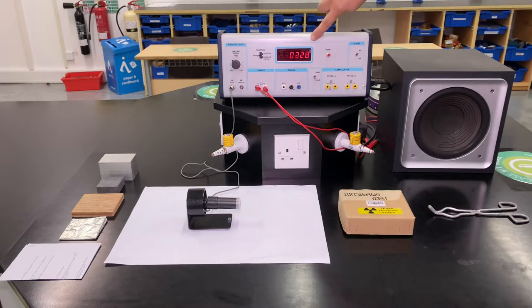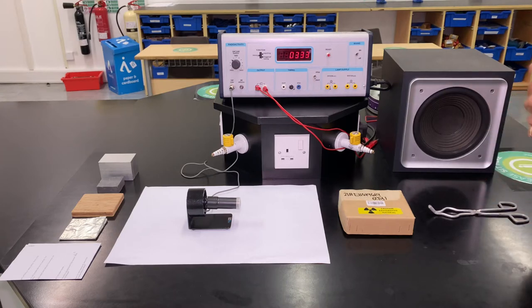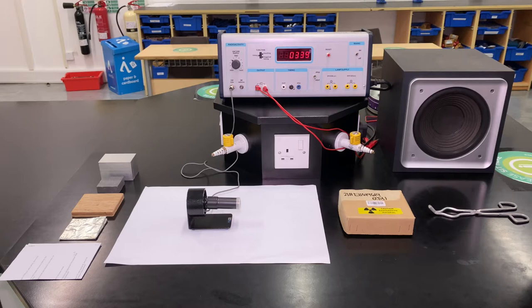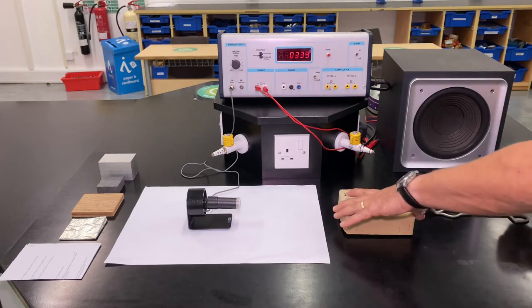This thing counts and gives a click each time it detects one. As we can see, the number of counts is going up slowly but steadily because there's something called background radiation in this room. Background radiation is totally natural—it occurs all around us—and at this level it's completely harmless.